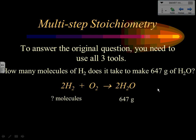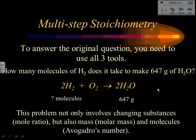How many molecules of hydrogen does it take to make 647 grams of water? This problem involves changing from one substance to another (mole ratio), but also involves mass and moles. To use the mole ratio, I need moles of water → moles of hydrogen. But I'm in grams, so I have to get to moles first, then convert moles to molecules using Avogadro's number. Worst case, stoichiometry problems are three-step problems.